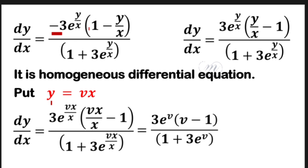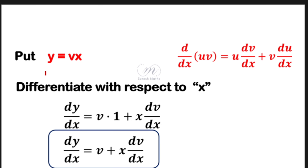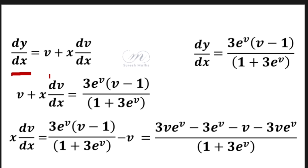Now we substitute y equals vx. We replace y by vx throughout the equation. So wherever y/x appears, we replace it using y equals vx. The next step gives dy/dx equals v plus x times dv/dx.